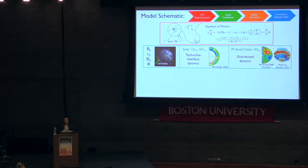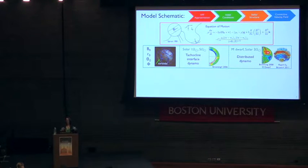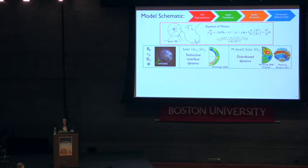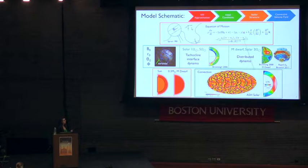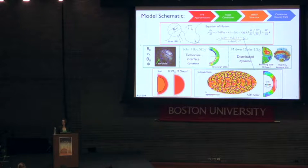We start with a simple toroidal geometry for our flux tubes. For some solar simulations, we assume these tubes are built in the tachocline. For a fully convective M-dwarf model and another rapidly rotating sun, we assume the flux tubes are built by dynamo action distributed in the bulk of the convection zone. A stellar structure model describes the background thermodynamic properties, and the flux tube is coupled to a time-varying convective velocity field through its drag force. We use the Anelastic Spherical Harmonic Code, ASH, for the convection model.